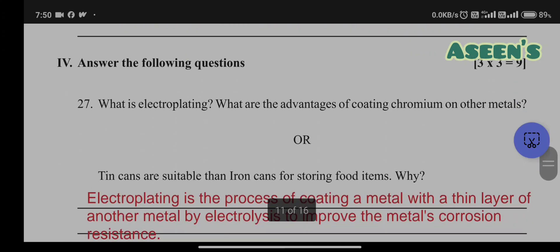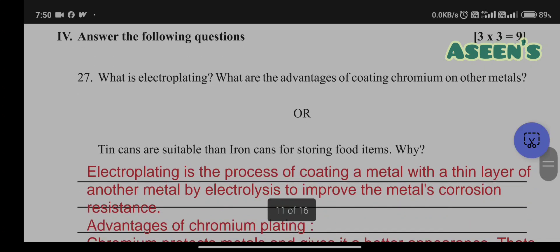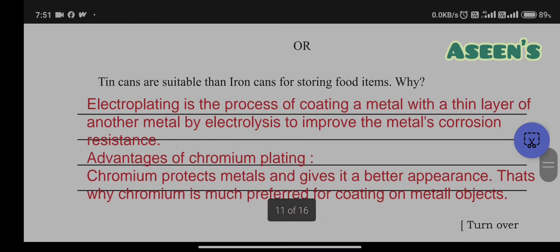What is electroplating? What are the advantages of coating chromium on other metals? Electroplating is a process of coating a metal with a thin layer of another metal by electrolysis to improve the metal's corrosion resistance. Advantages of chromium plating: chromium protects metals and gives a better appearance. It does not allow the metals to undergo rusting or oxidation.